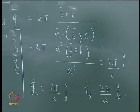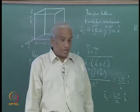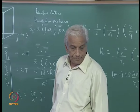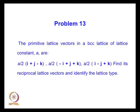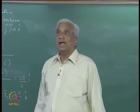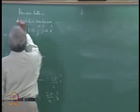So the reciprocal lattice is also a simple cubic lattice, because all primitive vectors have the same magnitude, with side 2π/a in reciprocal space. Therefore, the lattice constant in reciprocal space is 2π/a. Next, in a similar way, we determine the reciprocal lattice vectors for a BCC lattice.